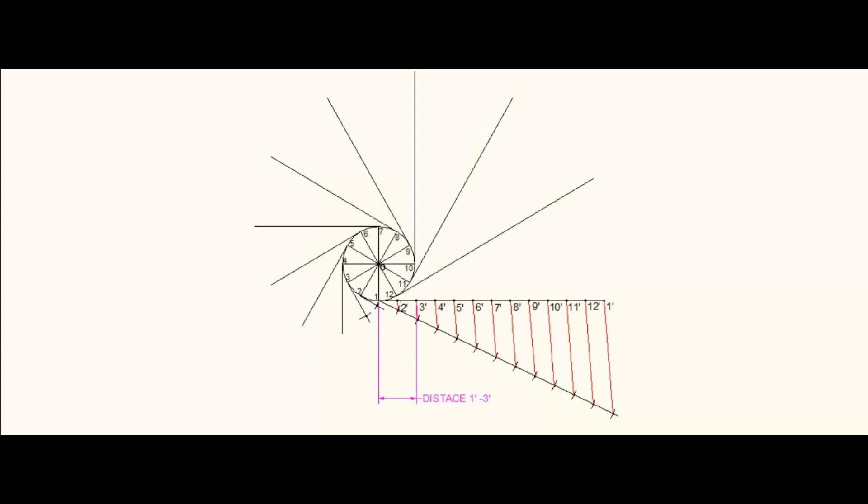Similarly, measure 1' to 3' and mark it on the perpendicular drawn from the third point of the circle. Do it for all the points.